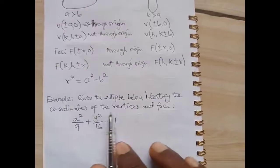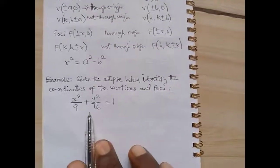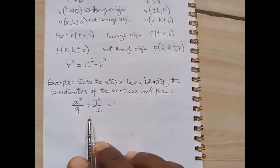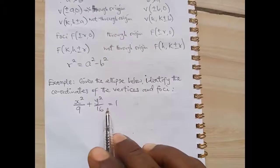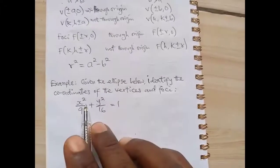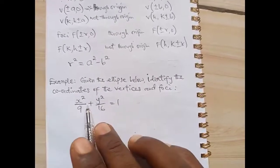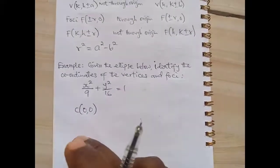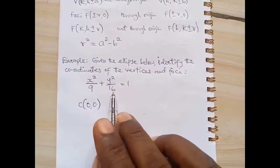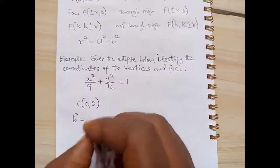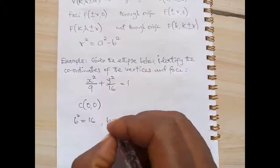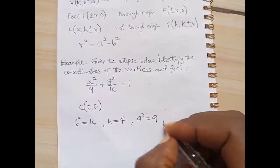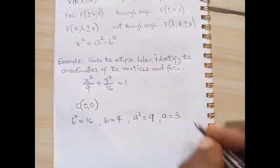For example: given the ellipse equation, identify the coordinates of the vertices and foci. Comparing with the general form (x minus h) squared over a squared plus (y minus k) squared over b squared, there is no h and no k, so this passes through the origin. The center is (0, 0). Here b squared is greater than a squared, so b squared equals 16, meaning b equals 4, and a squared equals 9, meaning a equals 3.